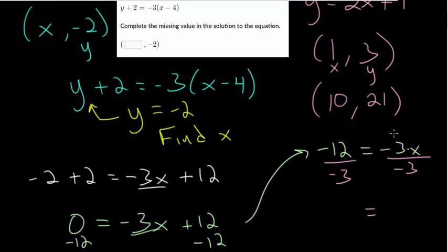Minus 3 over minus 3, that's just 1. So you just get 1x or x. 12 divided by 3 is 4. And you have a negative divided by a negative, which would cancel out and give you a positive. So 4 would be the missing value in this solution set.